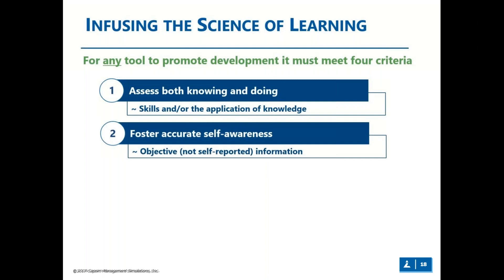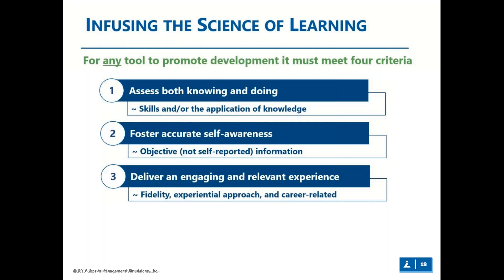Therefore, an effective tool needs practical application of both skills and knowledge — to assess the doing side just as much as the knowing side. The second criteria is the ability to foster accurate self-awareness. Instructional tools should establish a medium for students to better understand themselves, including both their strengths and weaknesses, how others perceive their abilities, and how their skill proficiency actually compares to others. Individuals who lack this self-awareness can sometimes strain relationships by misrepresenting their abilities and overestimating their contributions.